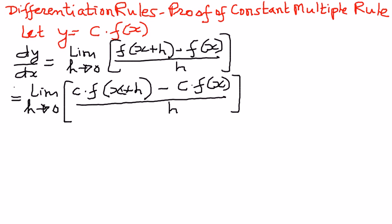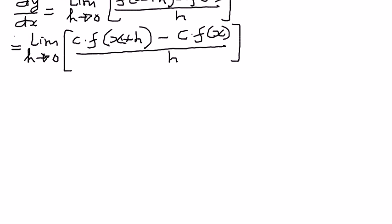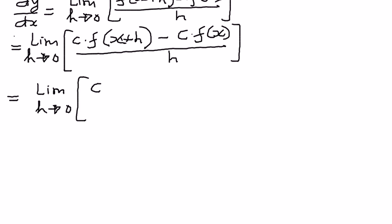Now, when we look at this, c is constant in the numerator part of this. So therefore, I'm going to write this as limit as h approaches 0, and pull out c as a common factor in the numerator part.